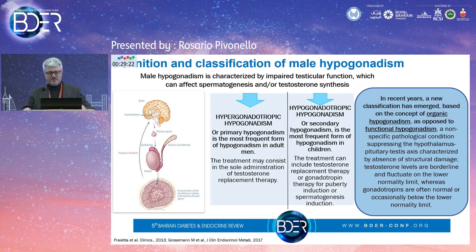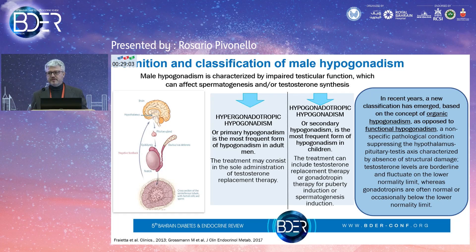Classification is always useful to open a talk. Male hypogonadism, which is increasing in recent years, is characterized by an impaired testicular function. When we talk about testicular function, we have to keep in mind that we are talking about two different functions: one is testosterone synthesis and production, and the other is spermatogenesis. We cannot forget that spermatogenesis is part of the functional testis.